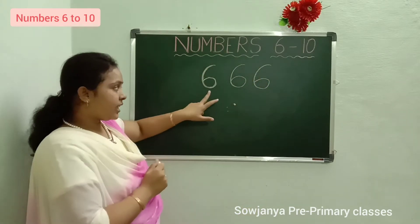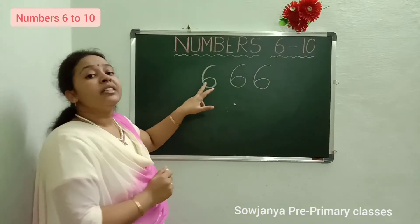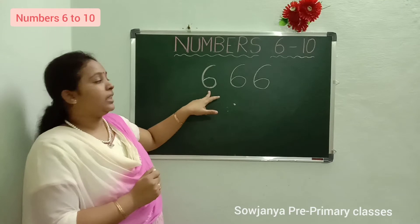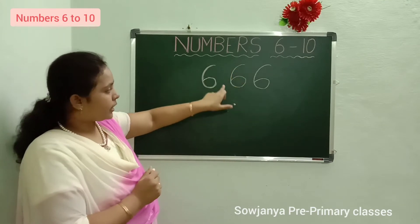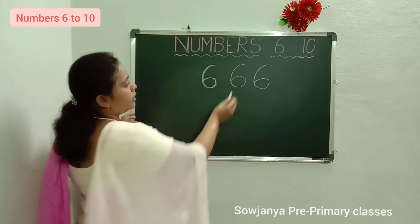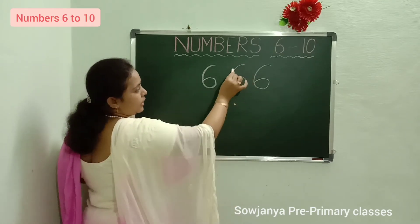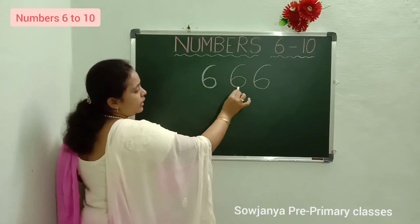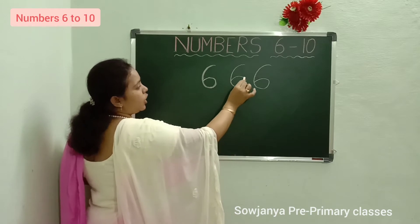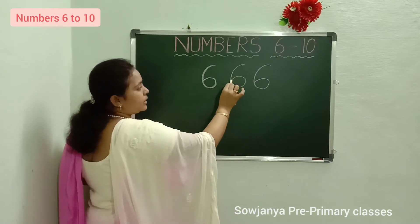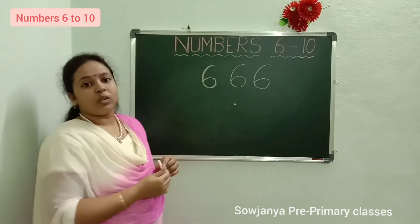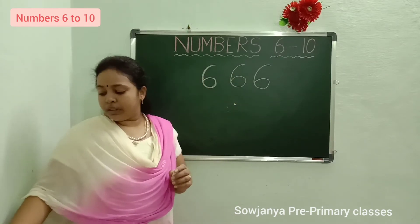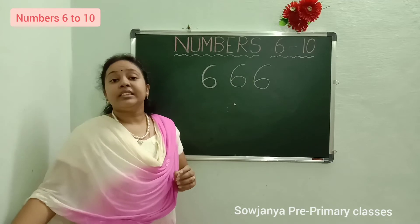What is this number? 6. How to write? Right curve. Inside the right curve, put a small circle. 6. What is this number? 6.